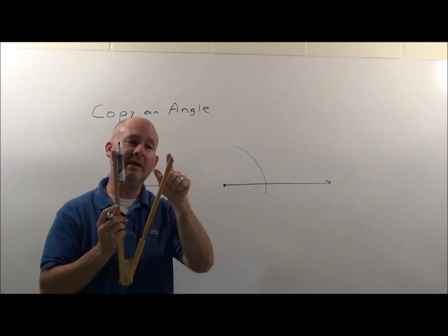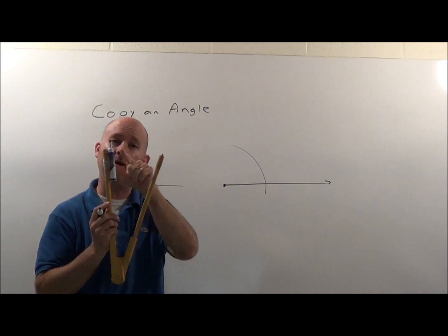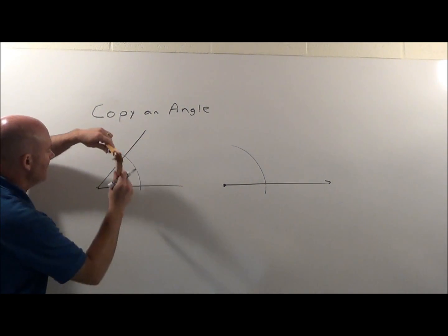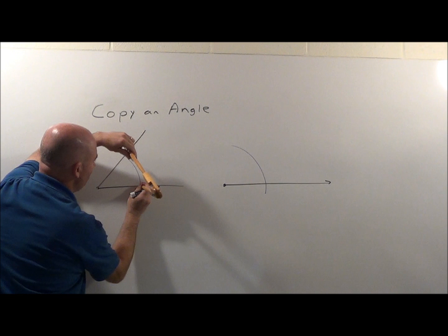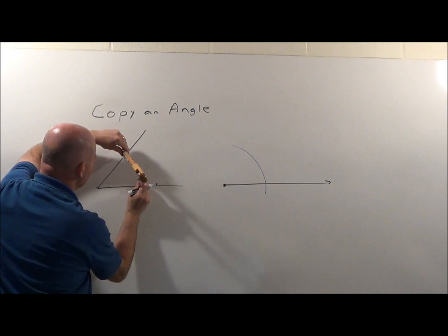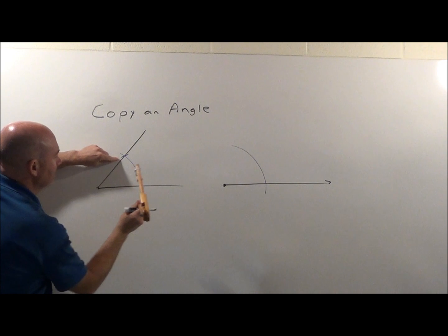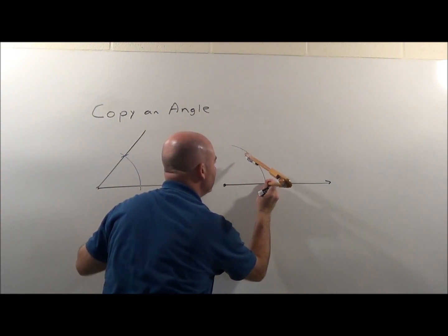This is where that measuring piece between them is going to come in handy. What I'm going to do is come back to this angle, put this right where it crossed that path, slide it in to where it's touching right on that path, and if I come over here and do the same...